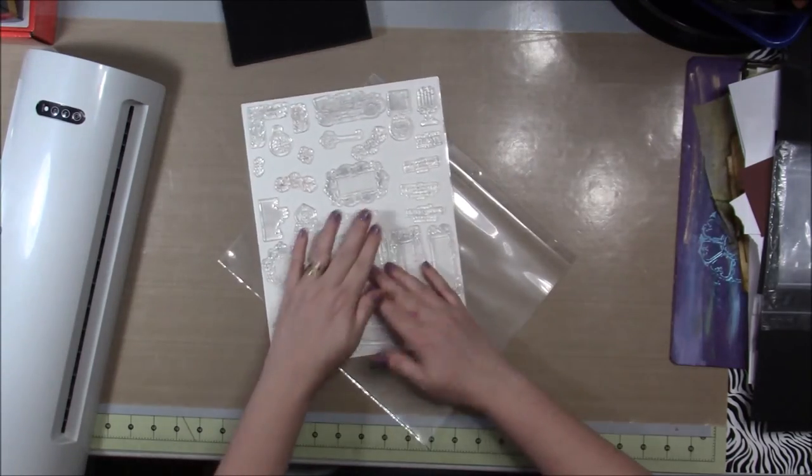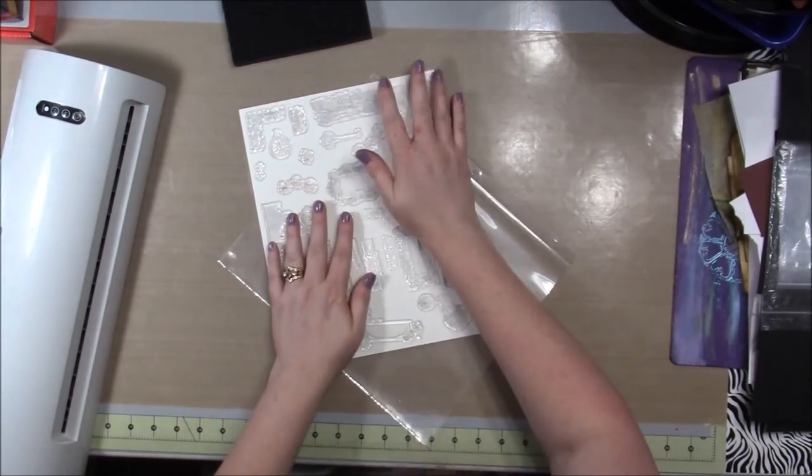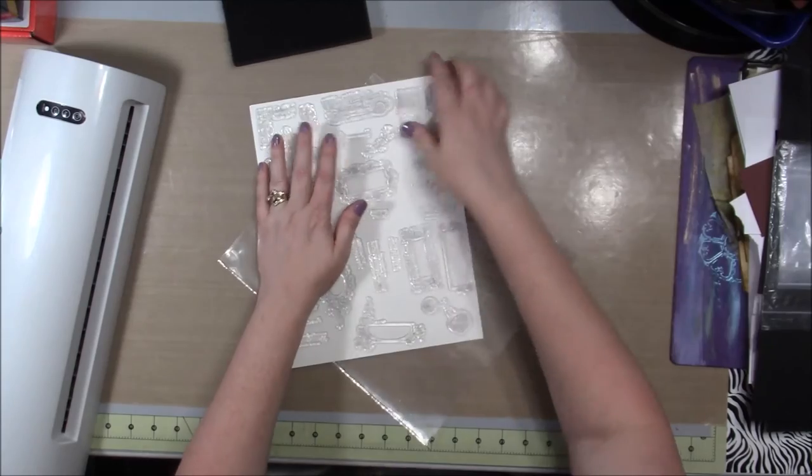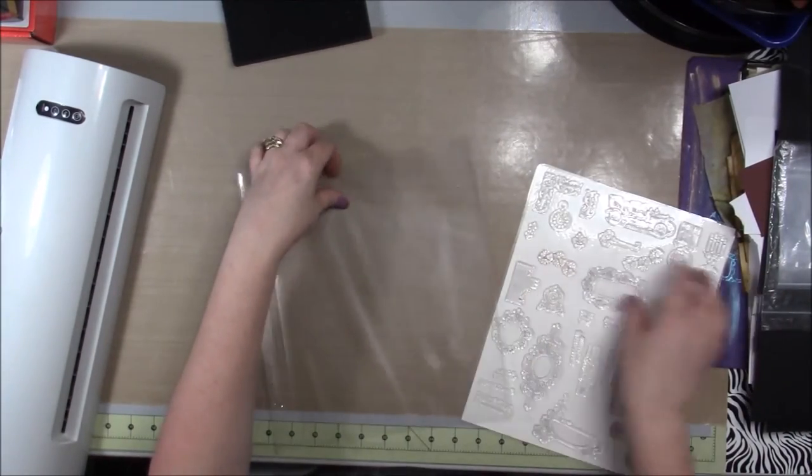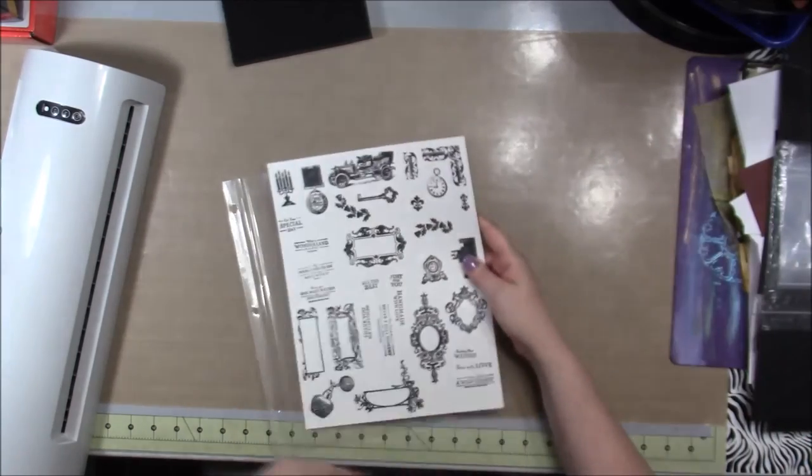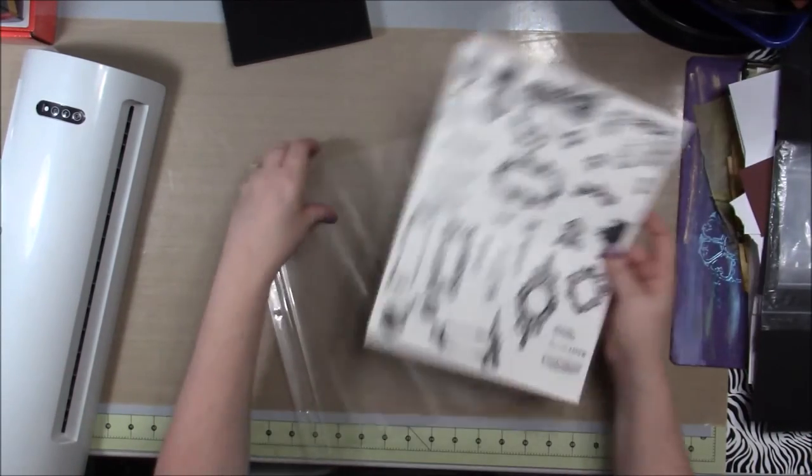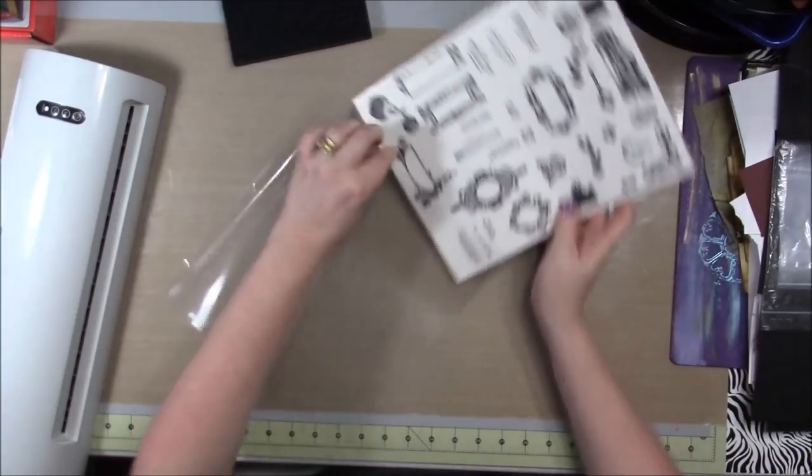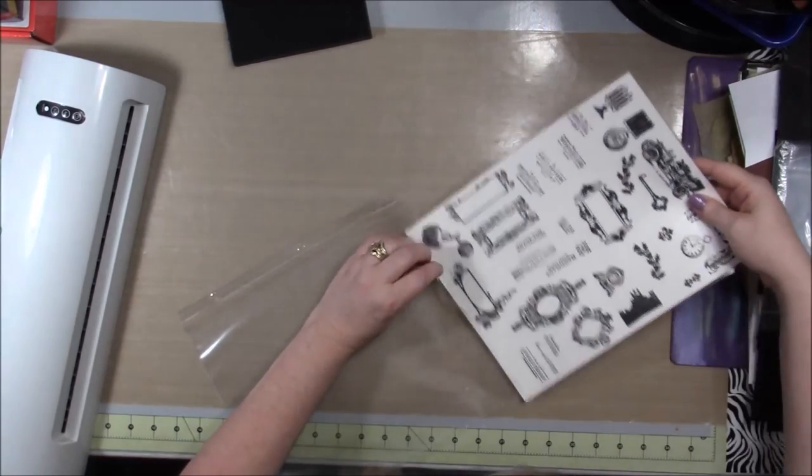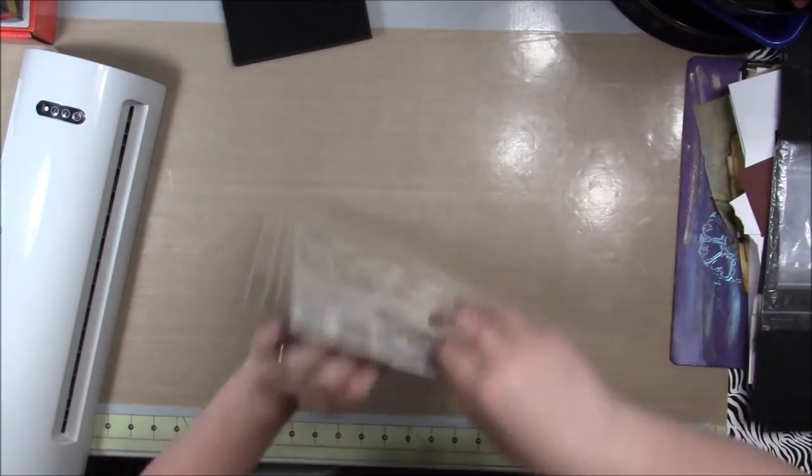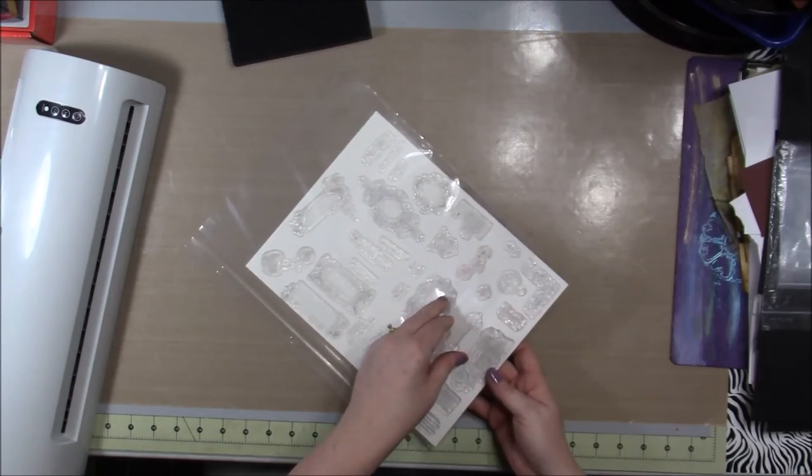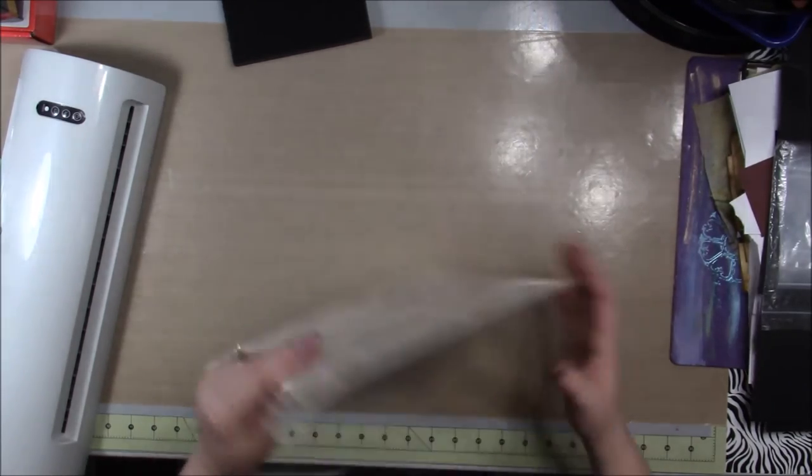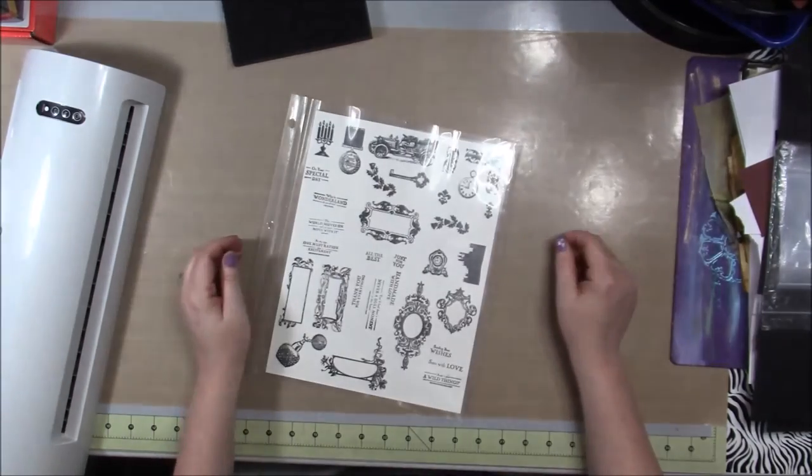So then you have all of your stamps on here, just make sure they're good and pressed down. And then what I do is I put them with the picture up so that when you're turning the pages you can see the images and pick out the image that you want. So then you just slide it in there like that, put it in your three-ring binder, and you're done.